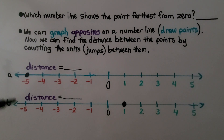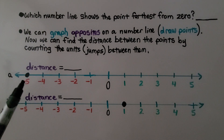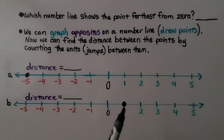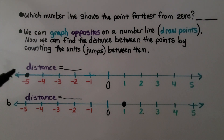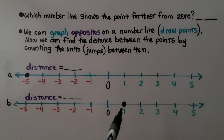Here we have two number lines: number line A and number line B. Which number line shows the point farther from zero? Number line A shows a point at negative five and number line B shows a point at positive one. The point farthest from zero is on number line A at negative five — it's five jumps away from zero, where positive one is only one jump away from zero.